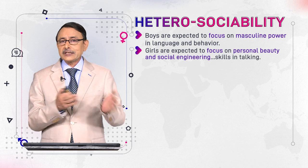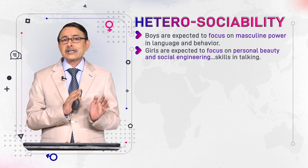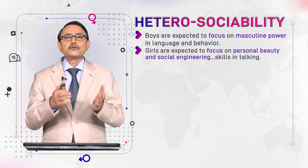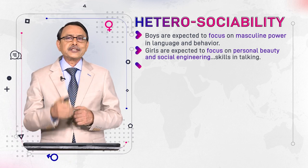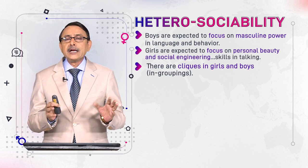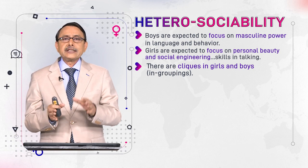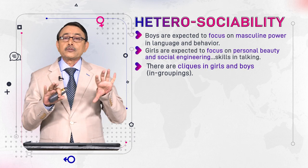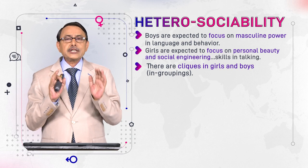Girls are expected to focus on their personality, personal beauty, and attractiveness. If some girl deviates from this, that girl would also face reaction from the group. This is how the group maintains gender order. There are cliques in both girls and boys — small groups within boys, small groups within girls, and then subgroups within those two larger groups. These are called cliques.